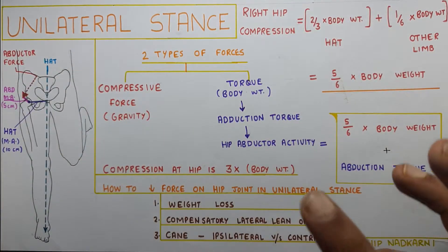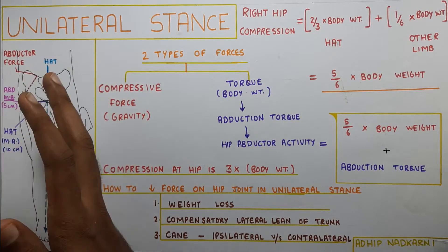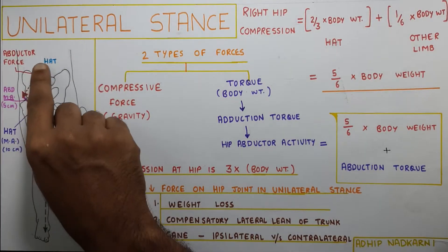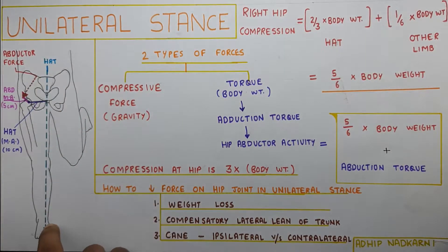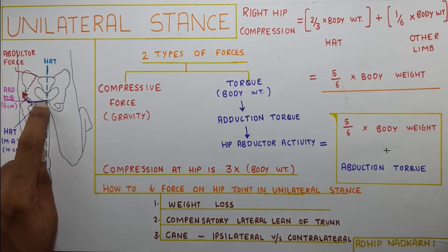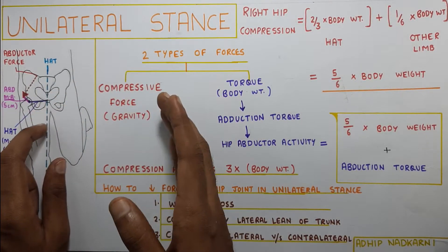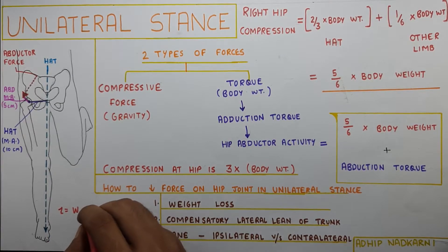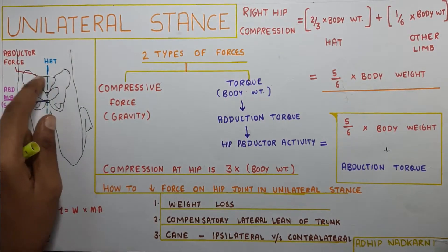Before we go on to the calculation of forces, I want you to understand the diagram and see what forces are acting. Starting with the HAT — that is head, arm and trunk — it comes straight from the top, passing through your center of gravity. The purple line is the HAT moment arm, from the axis of the hip joint to the perpendicular force. Torque equals force (W = weight) into the moment arm.